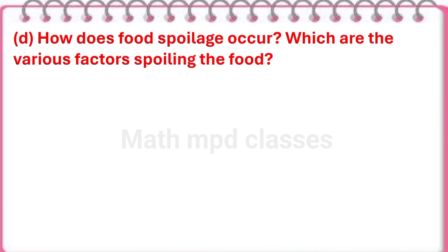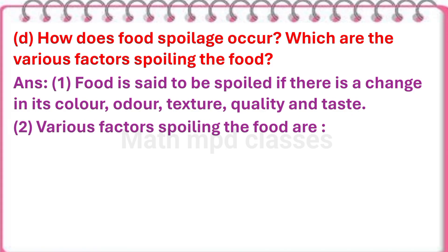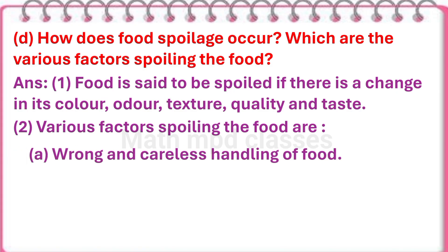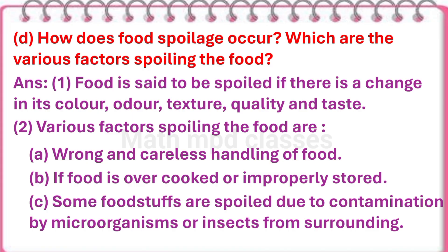Next question: How does food spoilage occur? Which are the various factors spoiling the food? Answer: Food is said to be spoiled if there is a change in its color, odor, texture, quality and taste. Various factors spoiling the food are: first, wrong and careless handling of food; second, if food is overcooked or improperly stored; third, some foodstuffs are spoiled due to contamination by microorganisms or insects from the surroundings.